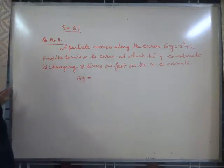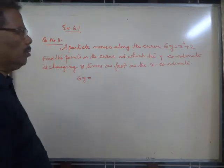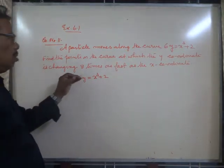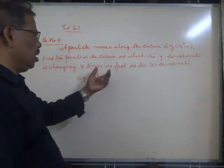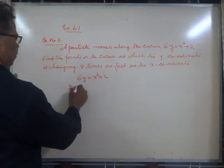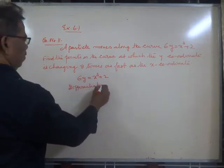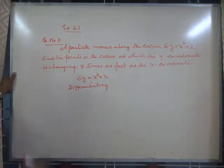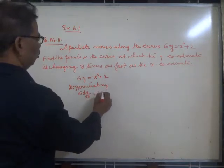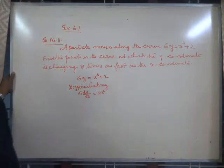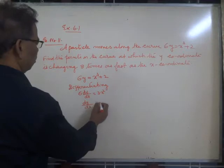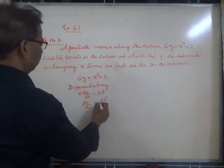A particle moves along the curve 6y = x³ + 2. Find the points on the curve at which the y-coordinate is changing 8 times as fast as the x-coordinate. We shall differentiate the given equation: differentiating both sides gives 6 dy/dx = 3x².